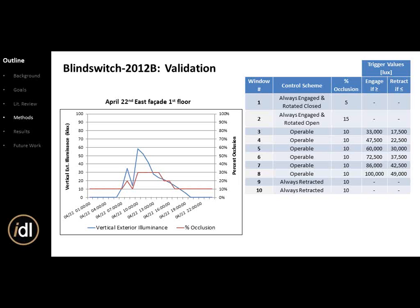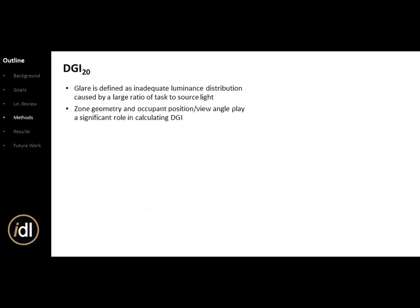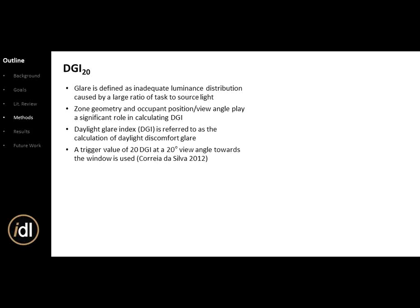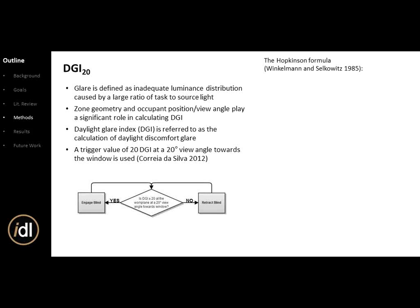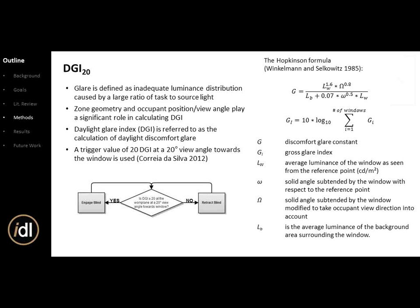DGI 20 is defined as an inadequate luminance distribution caused by a large ratio of task to source light. Geometry and occupant position — view angle — play a significant role in calculating DGI. It's referred to as the calculation of daylight discomfort glare. The trigger is 20 DGI at a 20-degree view angle toward the window. The flow chart is very simple: if above 20 DGI at the work plane, engage the blind; if not, retract. The Hopkinson formula was used, and there's a DGI algorithm already built into EnergyPlus, which is what we used to replicate Correa da Silva's work.